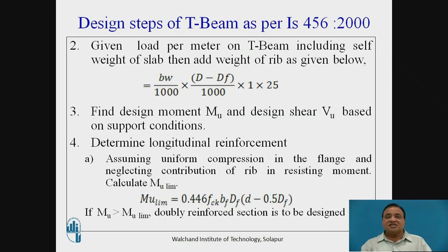Now design steps further for T beam will be given the load per meter on T beam including self weight of the slab. Then add the weight of rib. So BW divided by 1000 that is to convert it into meter. D minus DF that is DF is already considered for slab. So therefore total D minus DF divided by 1000 again to convert it into meter into 1 meter into 25. That is density of concrete 25 kN per cubic meter.